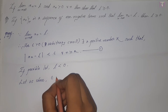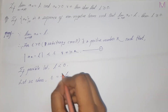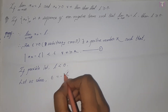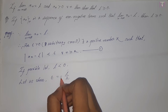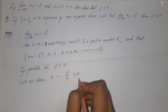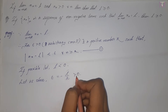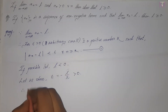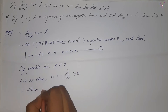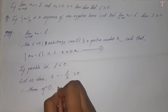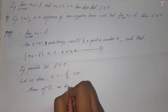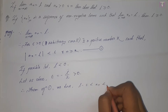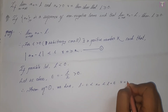We choose epsilon equal to minus l divided by 2. Since l is less than 0, this value is positive, so epsilon is greater than 0. Now from equation 1, we have l minus epsilon less than xn less than l plus epsilon, for all n greater than or equal to k.